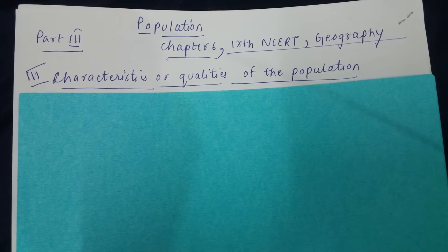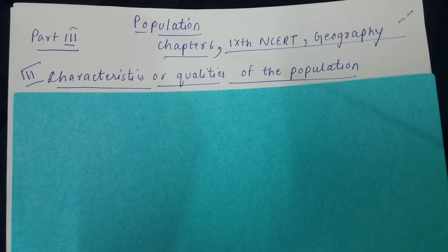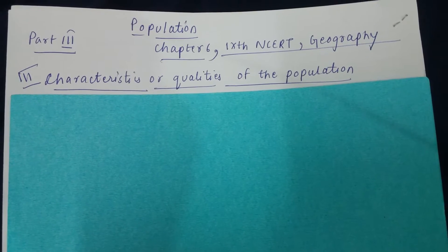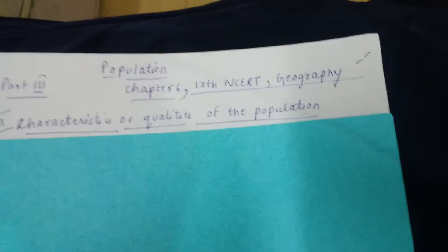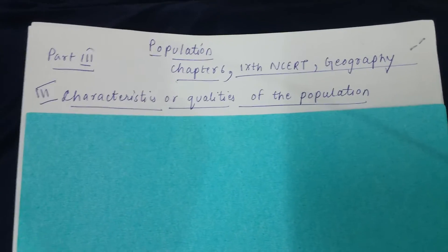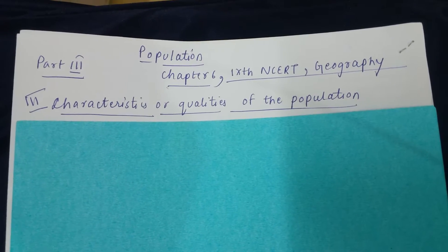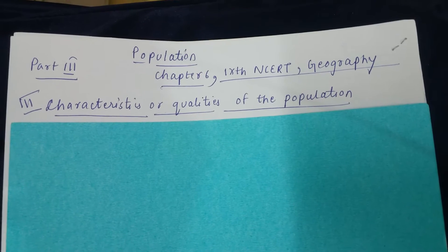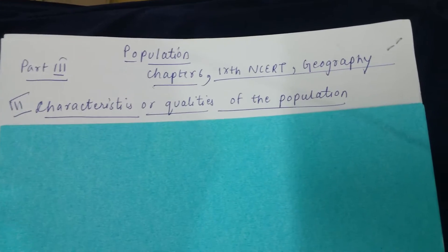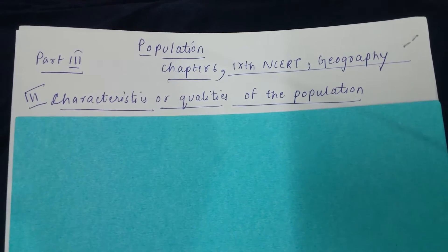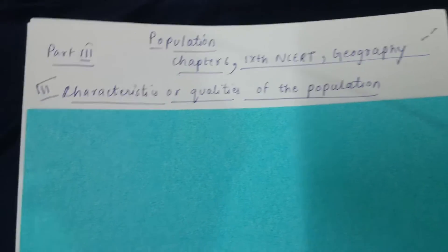Welcome back to my channel. This is part 3 of the population series, which is chapter 6 in your 9th class NCERT geography book. In the first two parts we talked about the size of population and how population can change, where we talked about birth rate, death rate, migration, etc. Now we will talk about the composition of population under the heading characteristics or qualities of the population.